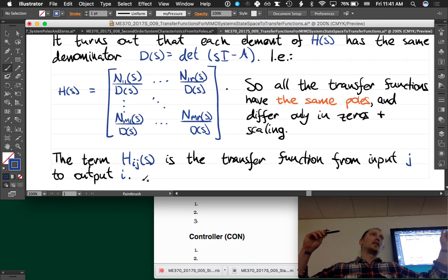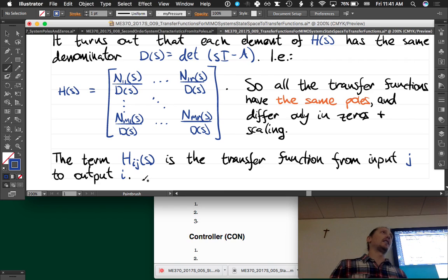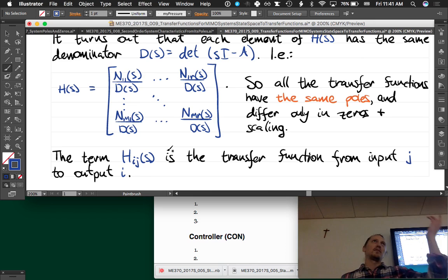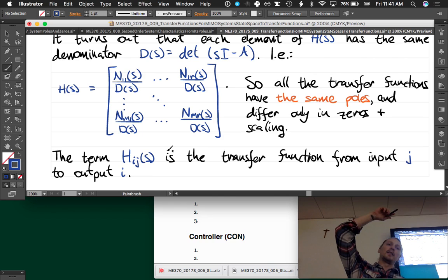You could find that transfer function. Say you cared about the output that's like the 7th output, that's in your list of outputs in your Y vector, and say you cared about how it's affected by input 3. You would go to the 7th row and then the 3rd column, and that would be the transfer function between them.